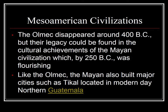The Olmec disappeared around 400 BC, but their legacy could be found in the cultural achievements of the Mayan civilization, which by 250 BC was flourishing. There were Mayans in the area during the time the Olmec were living. The height of the Mayan civilization — what we call their golden or classical period — began around 250 BC. Prior to that is the pre-classical age, followed by the classical age beginning in 250 BC, then the post-classical age, and finally the period of Spanish conquest.